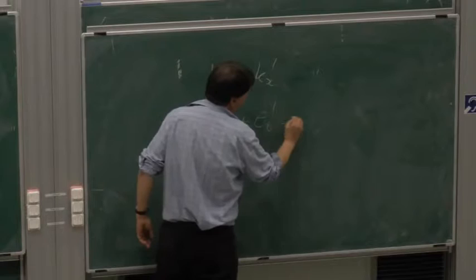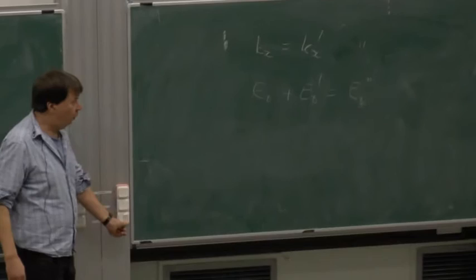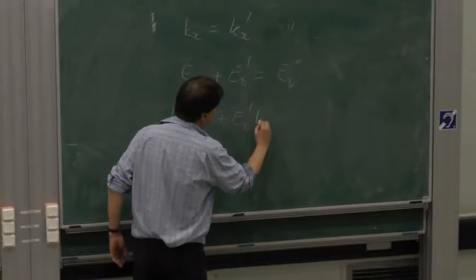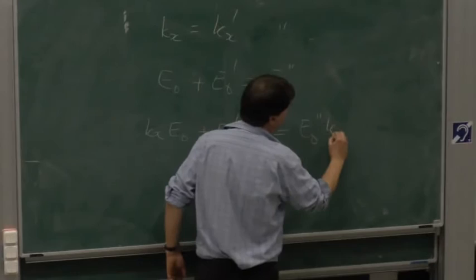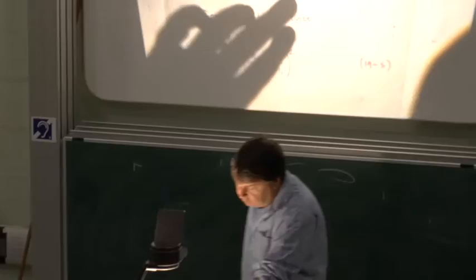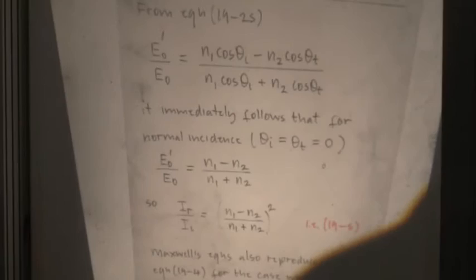From Maxwell's equations at the interface, continuity of the electric field gives one relation quite immediately, and continuity of the magnetic field — proved in Feynman — gives another. Given these relations and Snell's law, the coursework asks you to prove the final algebraic steps. It took almost two lectures to get to equation 19-3, so we won't go through the whole thing for equation 19-4, which covers parallel polarized light — the algebra is even a bit more involved.